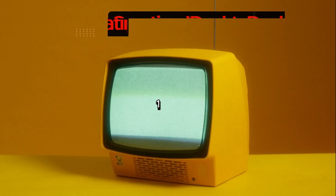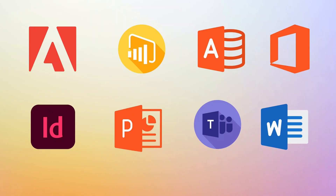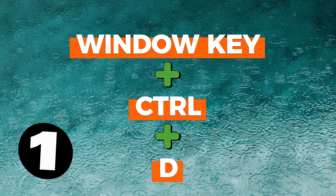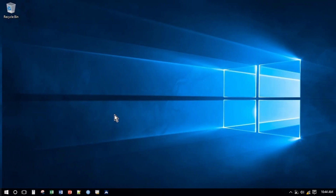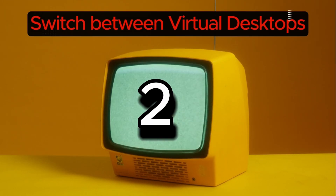Keyboard shortcut number one: create a virtual desktop. If you have too many apps open and you need a breather, press Windows key + Ctrl + D to open a virtual desktop. You'll get a new desktop to work upon, giving you the liberty to work afresh.